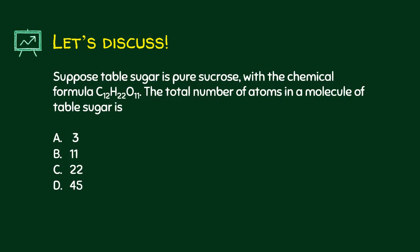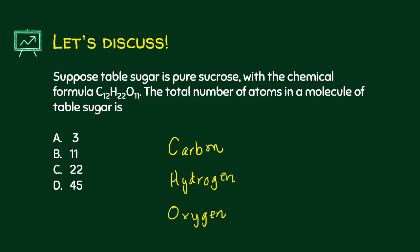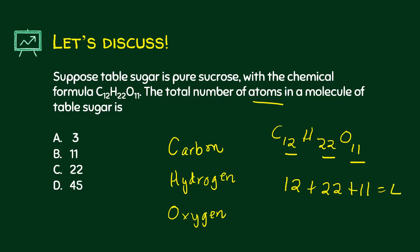Suppose table sugar is pure sucrose with the chemical formula C12H22O11. C stands for carbon, H stands for hydrogen, and O stands for oxygen. This tells us there are 12 atoms of carbon, 22 atoms of hydrogen, and 11 atoms of oxygen in one molecule of sucrose. Therefore, the total number of atoms is 12 plus 22 plus 11, which equals 45.